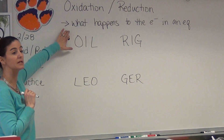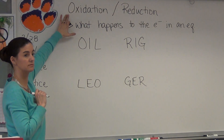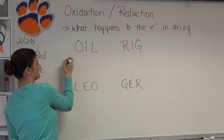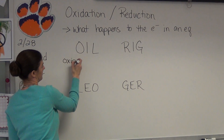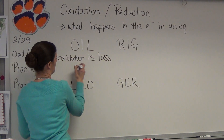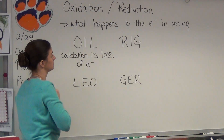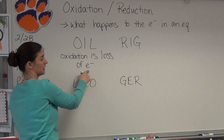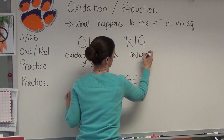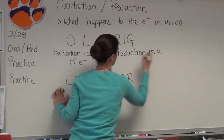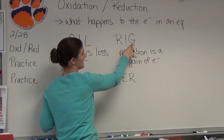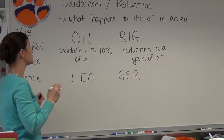This is how you're going to remember what's happening to the electrons to decide if it's oxidized or reduced. OIL RIG stands for: oxidation is a loss of electrons. Reduction is a gain of electrons. So we're always talking about what's happening with our electrons.